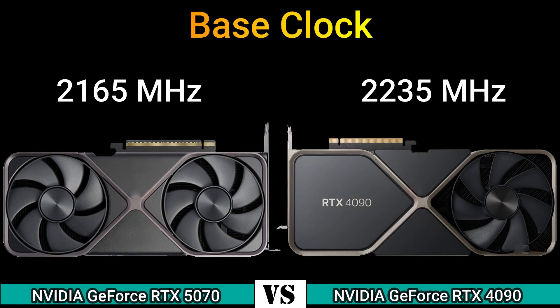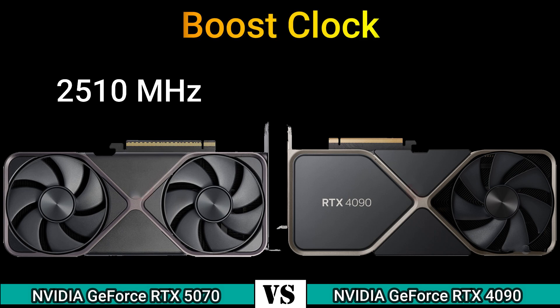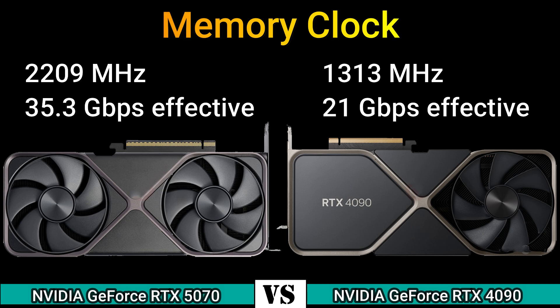Base clock: 2165 MHz and 2235 MHz. Boost clock: 2510 MHz and 2520 MHz. Memory clock: 2209 MHz (35.3 GB/s effective) and 1313 MHz (21 GB/s effective).